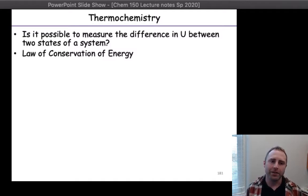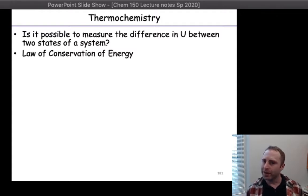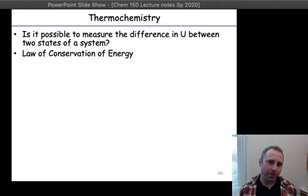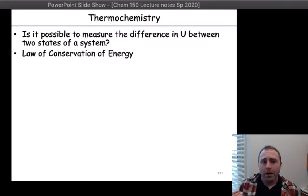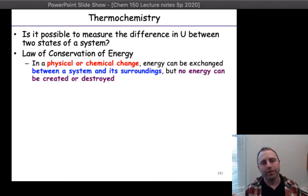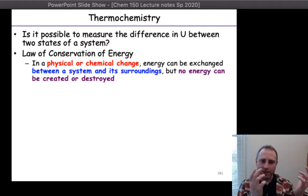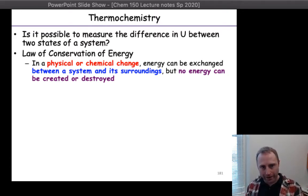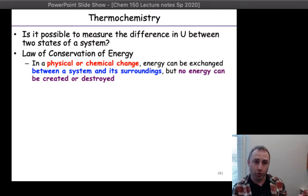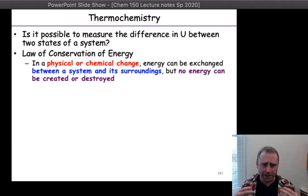Is it possible to measure the difference in internal energy between two states of a system? Like with the mountain example — if we know the final and the initial, we can figure out the change in height. Well, if we're going to figure out the change in internal energy of a system, we have to figure out what the internal energy is at the beginning and the end. We said it's pretty hard to measure that explicitly. So this is where the law of conservation of energy comes into play: for physical or chemical changes, energy is exchanged between a system and its surroundings, but energy is not created or destroyed.